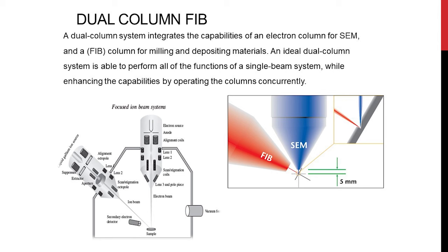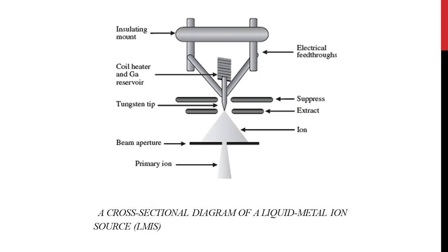Let us look at the schematic of a dual beam system. It is a combination of two beam systems — the electron column at 0 degrees and the ion column is located at an angle of 52 degrees. This is a cross section of a source which is mainly used in the focused ion beam. In focused ion beam, we use a liquid metal ion source, which is basically gallium, because of its very low melting point. We have a reservoir of gallium which is heated to a certain temperature, and then we have a tungsten tip attached to the reservoir.